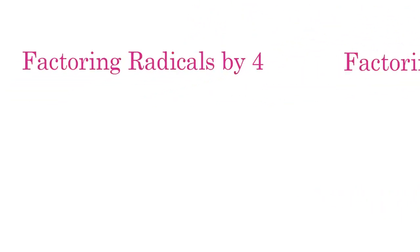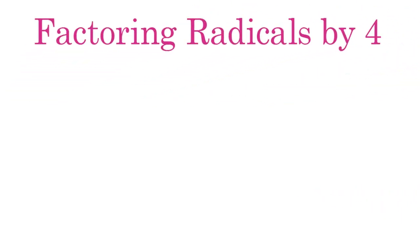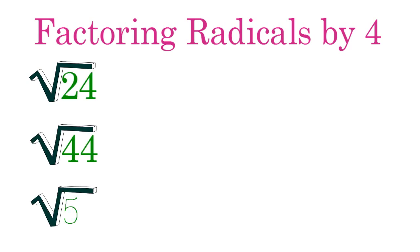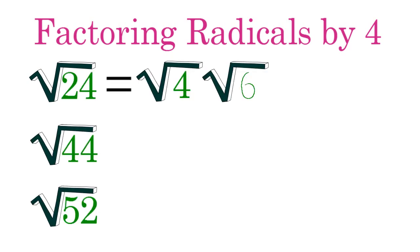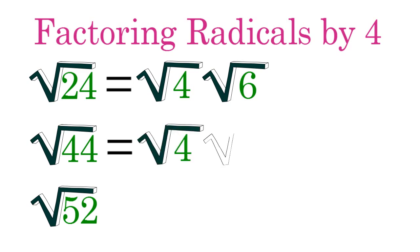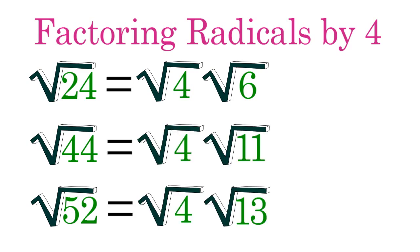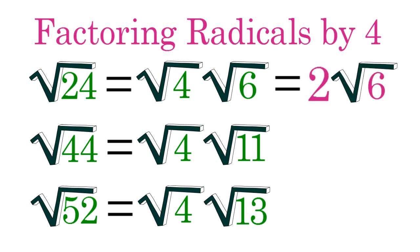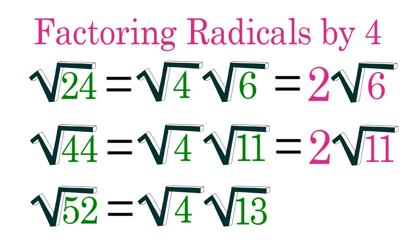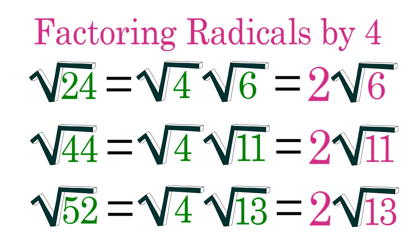To begin, you discovered that the radical of any number that is divisible by 4 can be simplified by factoring out a radical 4 and then simplifying it to 2. For example, radical 24 equals 2 radical 6, radical 44 equals 2 radical 11, and radical 52 equals 2 radical 13.